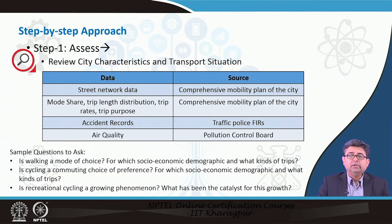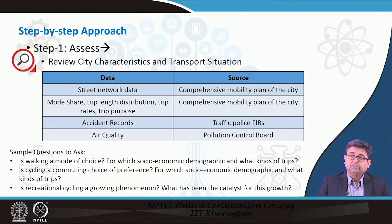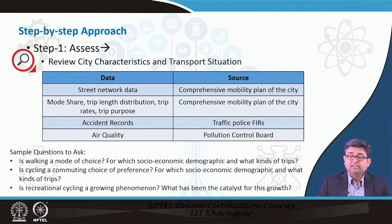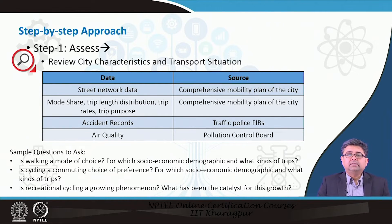To make this assessment you need to collect certain data, otherwise your assessment may be very qualitative in nature. Although we want some qualitative perspective, having quantitative perspective along with the qualitative will make the planning process more robust and accountable. Street network data can be collected from the city's comprehensive mobility plans; modal share and trip data are also in the CMPs; accident data are available in police FIRs; and air quality data may be available from the pollution control board.